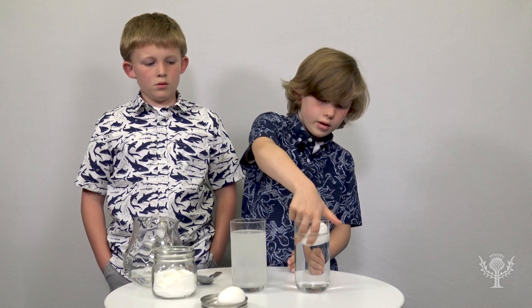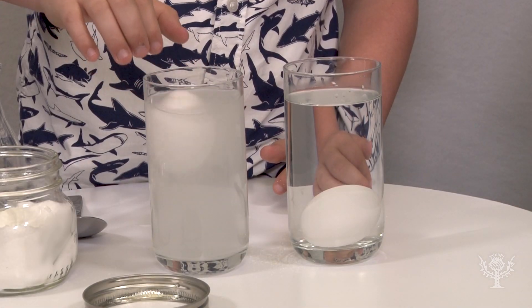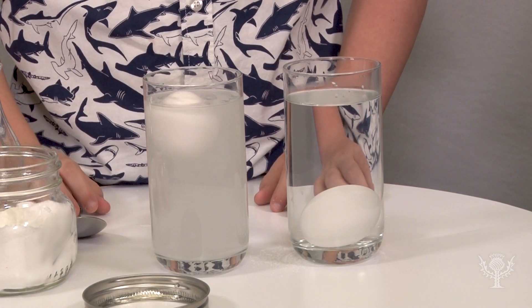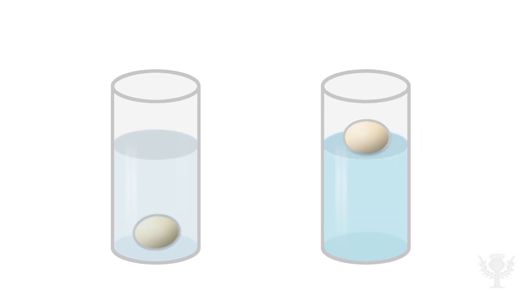Now gently drop an egg into the glass without the salt — it sinks. But when you gently drop an egg into the glass with the salt, it floats. The egg is denser than water, so without any assistance, it sinks. Adding salt to the water makes the water more dense and allows the egg to float.